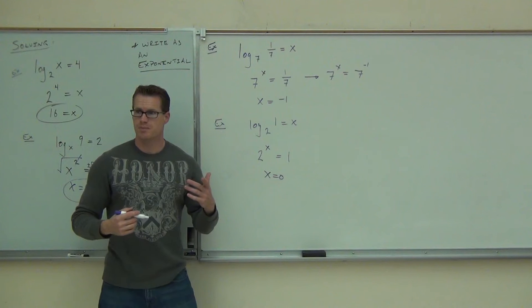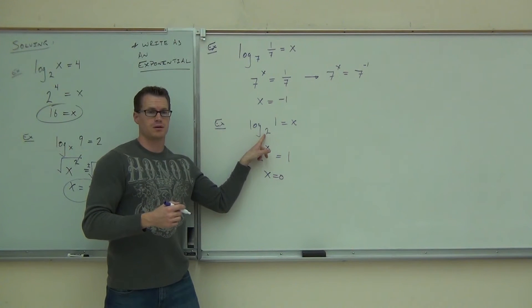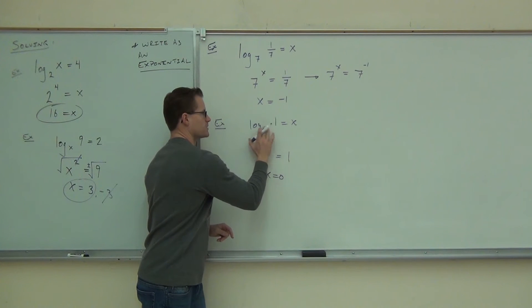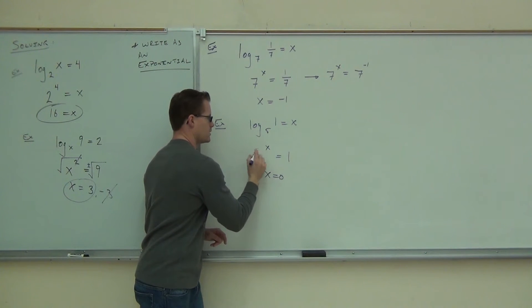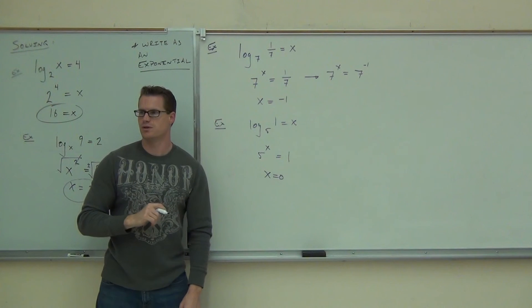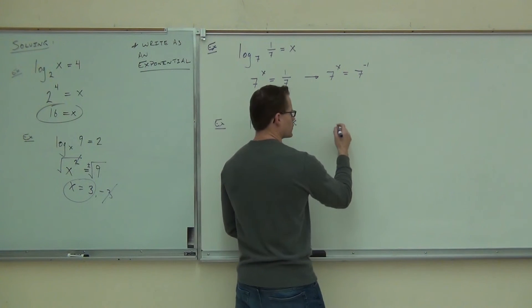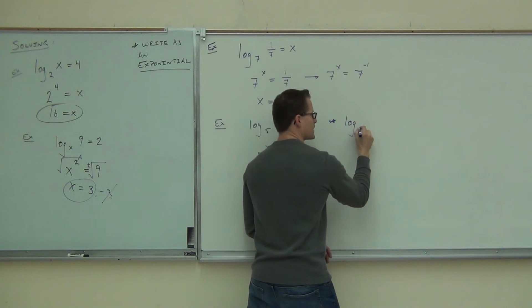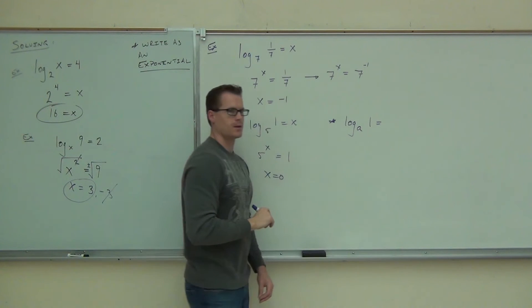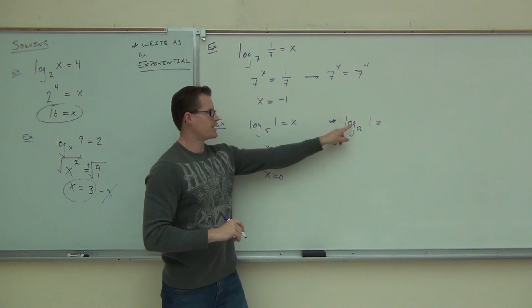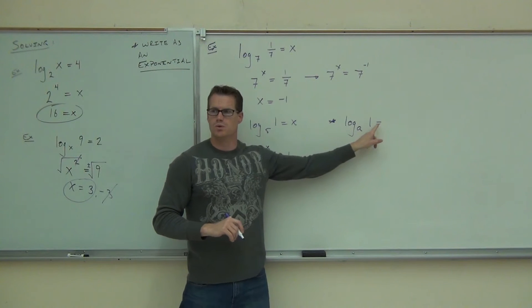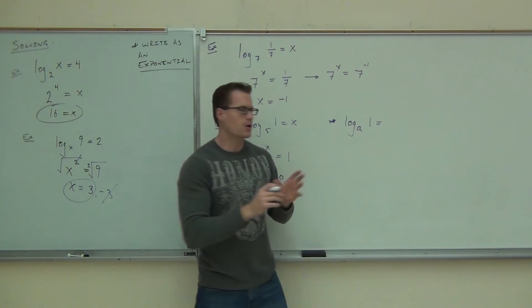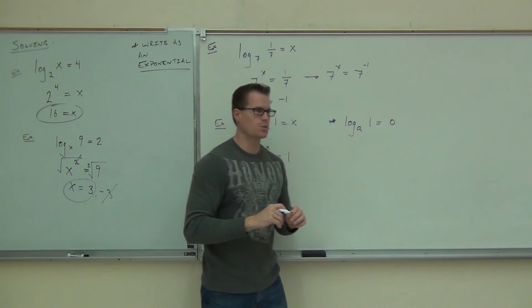The question is, if I change this base to anything, is this answer going to change? No. So if I say, oh, now the base is 5. So that would be 5. Is x still equal to 0? Yes. Here's what this says. Just a little property. Log base anything of 1. Log base anything of 1 gives you, what is that? That's a property right there. If you have a logarithm of 1, no matter what the base is, it's going to equal 0.